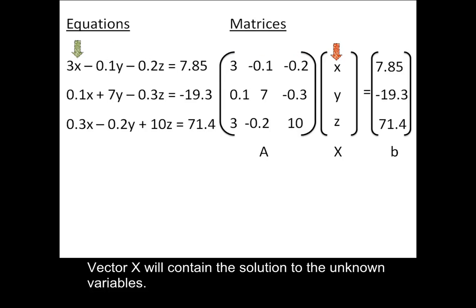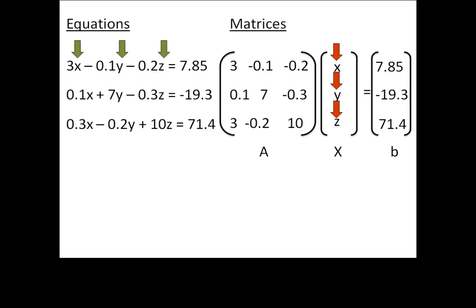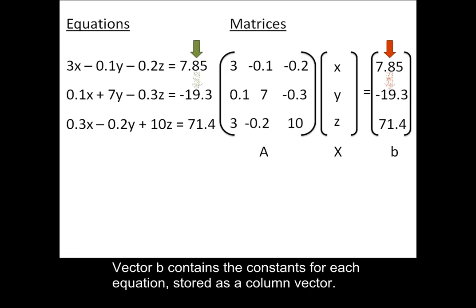Vector X will contain the solution to the unknown variables. Vector B contains the constants for each equation stored as a column vector.